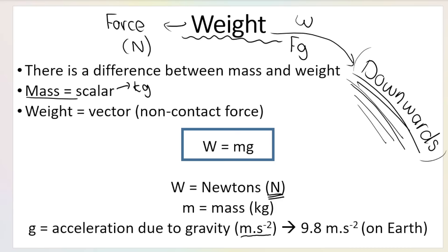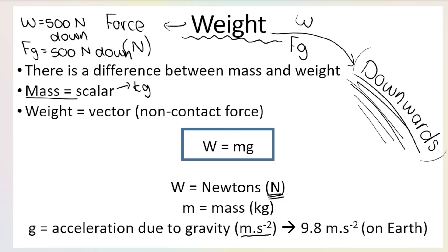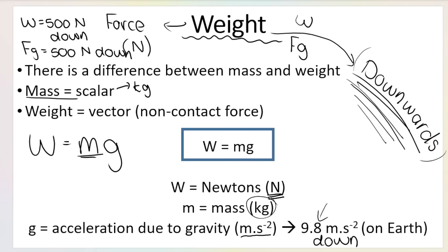You may see weight written as W or Fg — those are just different symbols for the same thing. For example, weight equals 500 Newtons downwards, or Fg = 500 N downwards. The formula for weight is: weight equals mass times acceleration due to gravity. Mass is in kilograms, gravitational acceleration is in metres per second per second, and on Earth it's 9.8 m/s² downwards. Because acceleration due to gravity acts downwards, weight also acts downwards.